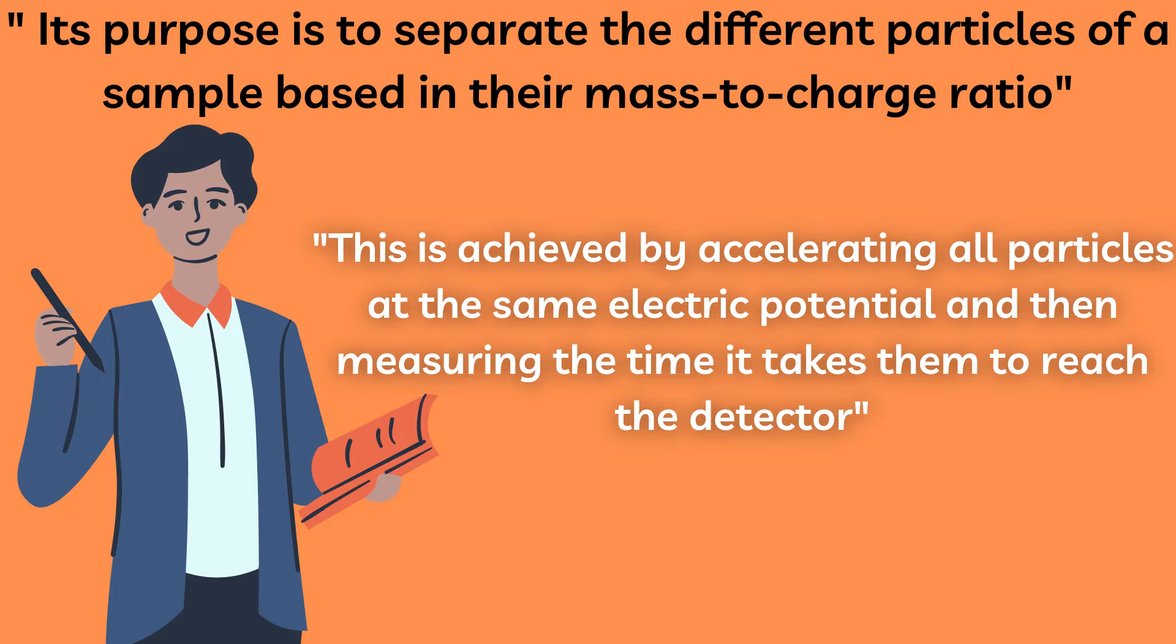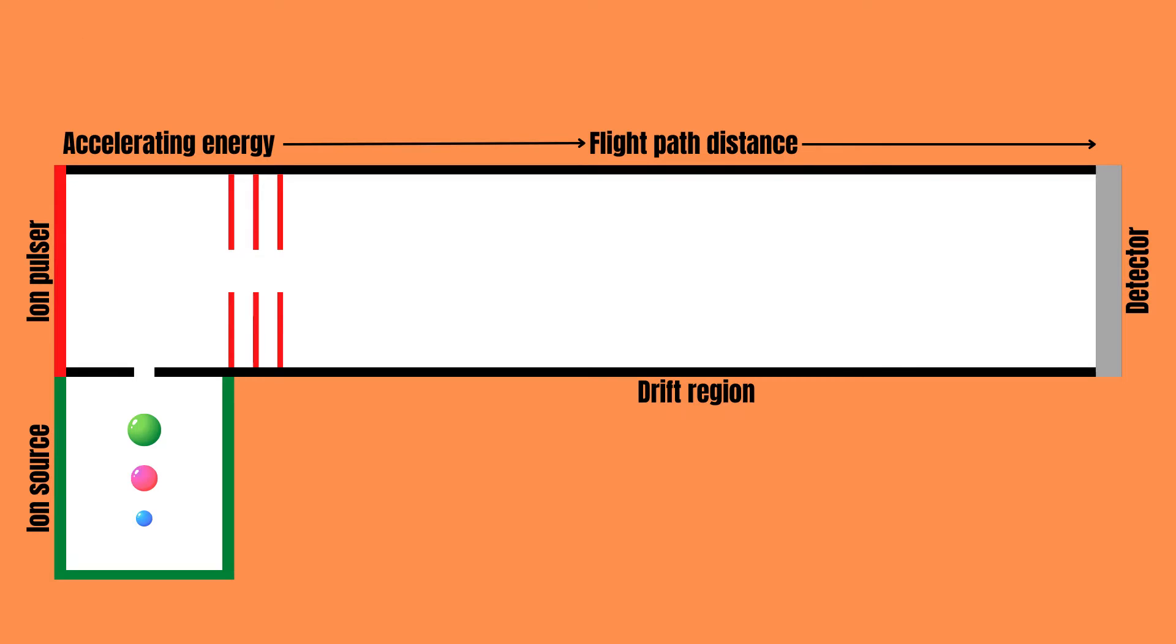In a time of flight mass analyzer, this is achieved by accelerating all particles at the same electric potential and then measuring the time it takes them to reach the detector. From this, the individual masses of the particles can be calculated. Let us take a closer look at how this is done.